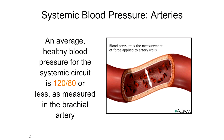A lot of students come into this class with some background in medicine, but I want to make sure we're all on the same page with what blood pressure is. You may have heard that an average healthy blood pressure for the systemic circuit is 120 over 80 or less, as measured in the brachial artery.